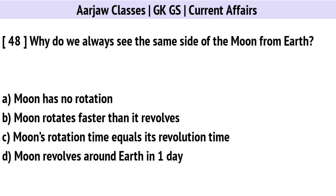Why do we always see the same side of the Moon from Earth? Correct option is C: Because the Moon's rotation time equals its revolution time.